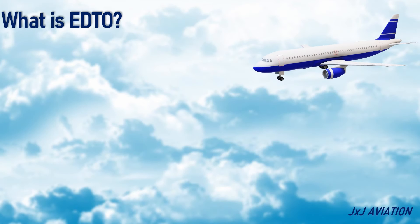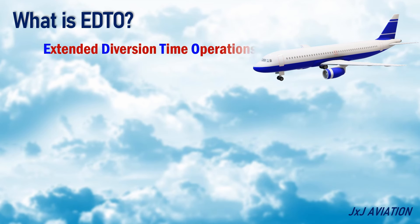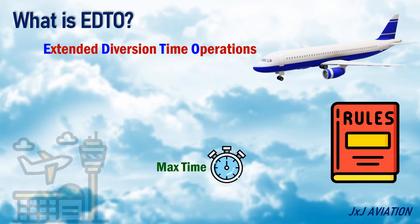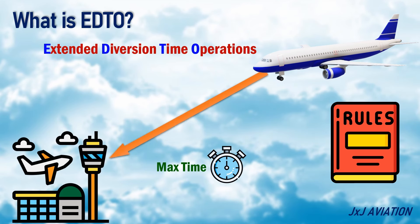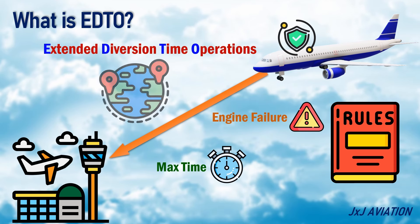What is EDTO? EDTO stands for Extended Diversion Time Operations. EDTO is a set of rules and guidelines established by aviation authorities. These rules regulate the maximum time duration that an aircraft can fly to a suitable airport in the event of an engine failure. This ensures the safety of everyone on board an aircraft, especially on long-distance flights.